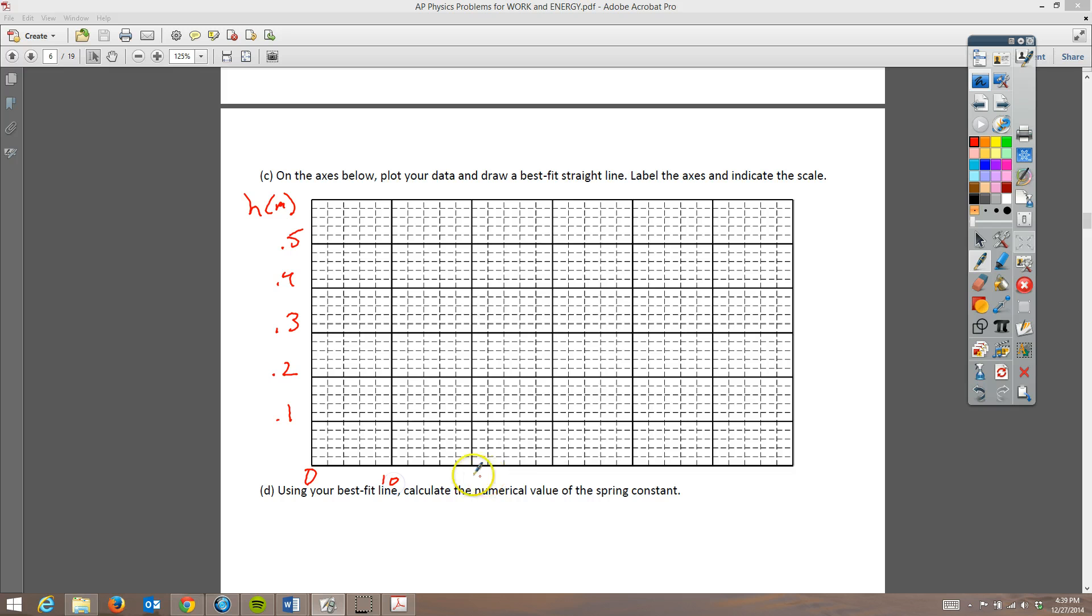And we're going to go 10, 20, 30, 40, 50, and these are all 1 over m, which is a kilogram to the negative 1. So we're plotting height versus 1 over m because that's kind of what our equation says. Remember, our equation is h is equal to, and then we had kx squared all over 2mg. So we're going to put h over on this side, and we're going to put the 1 over m on this side.